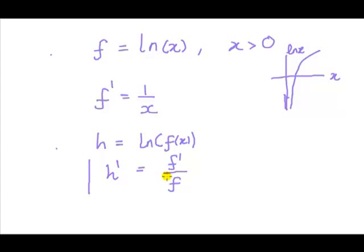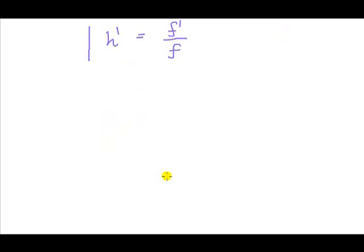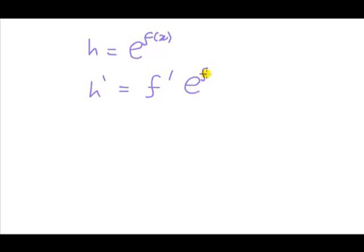That's logs. Exponential. So say we've got h is equal to exponential of some function of x. Then this is also a composite function, or a function of a function, and we can show using the chain rule this is going to be equal to derivative of f times by e to the f like that.